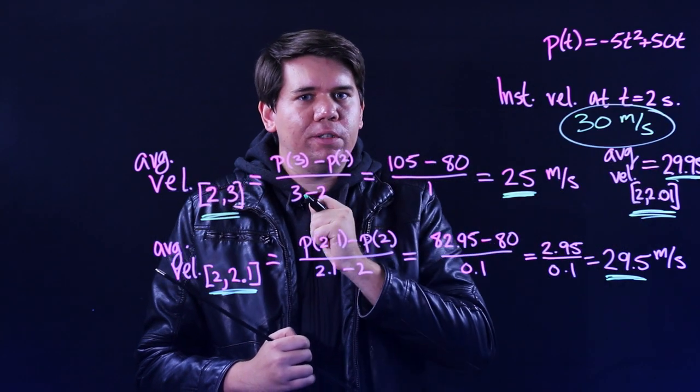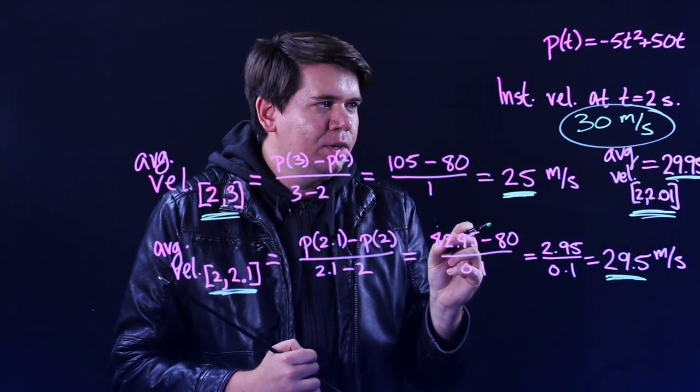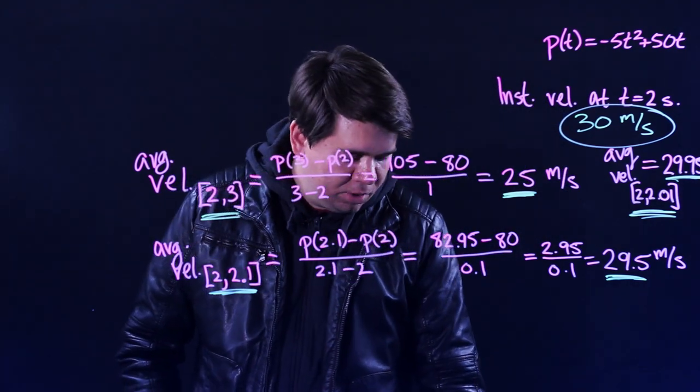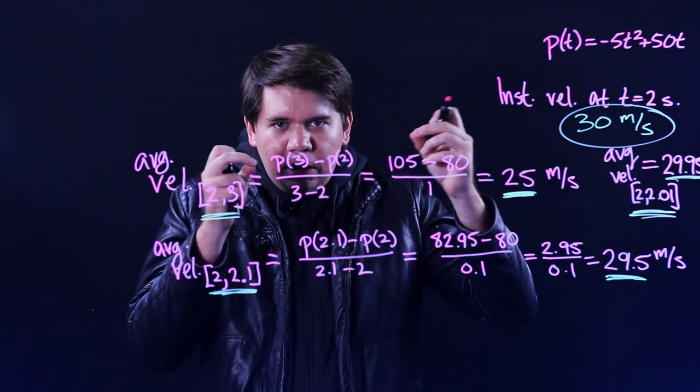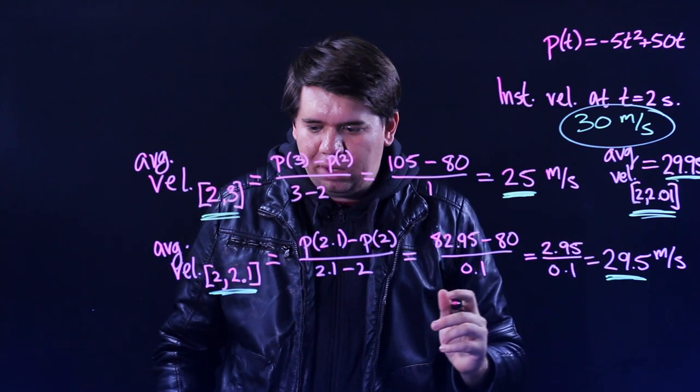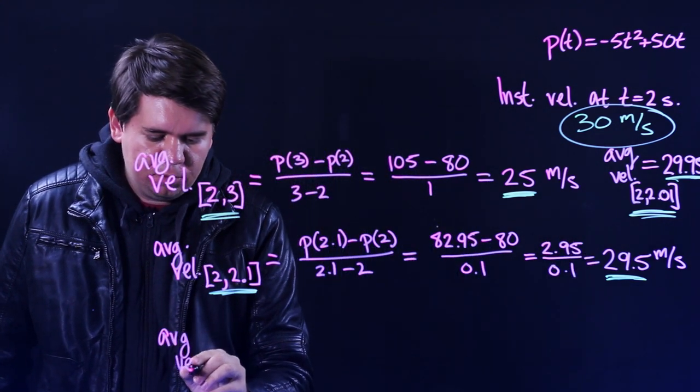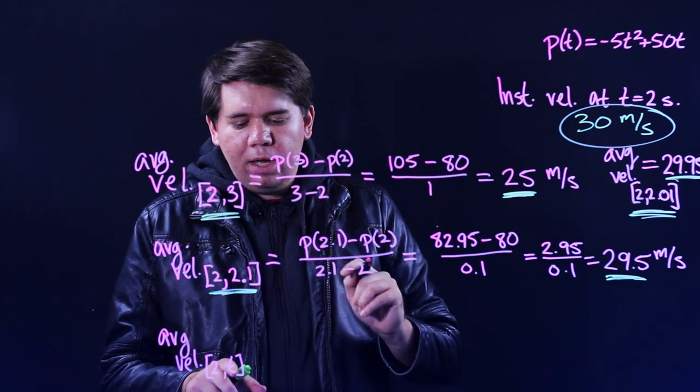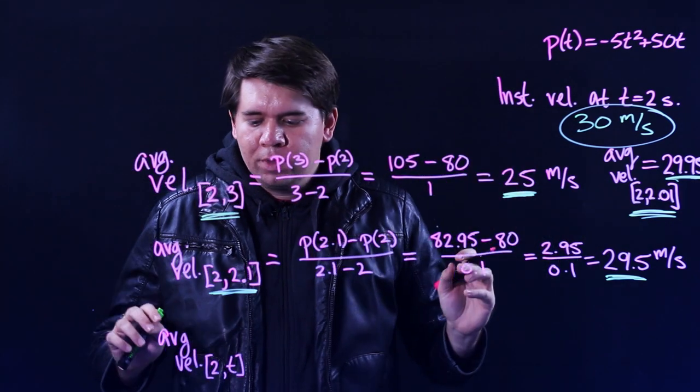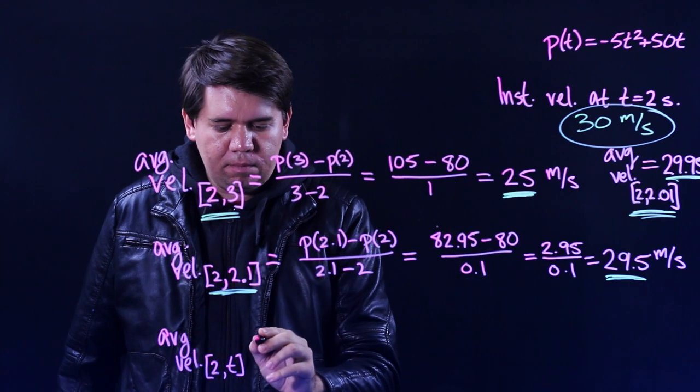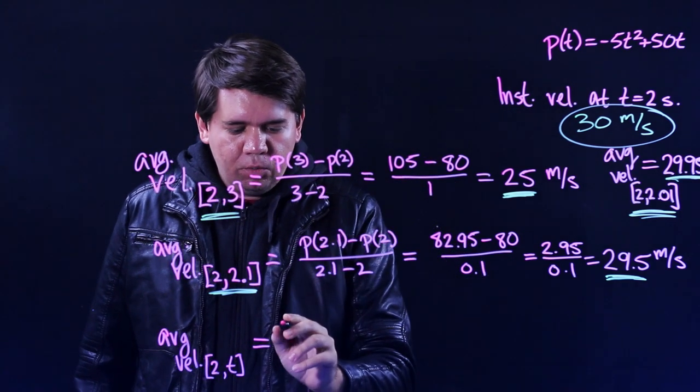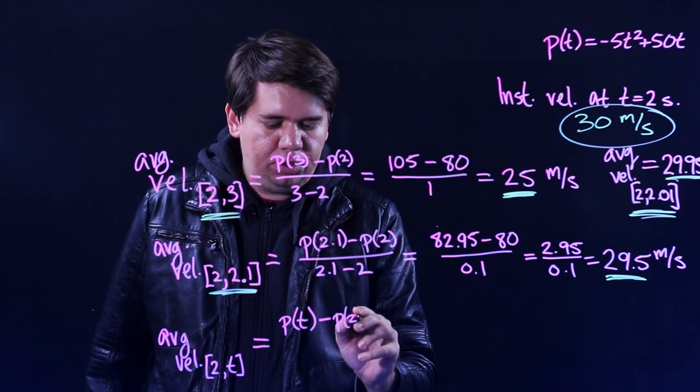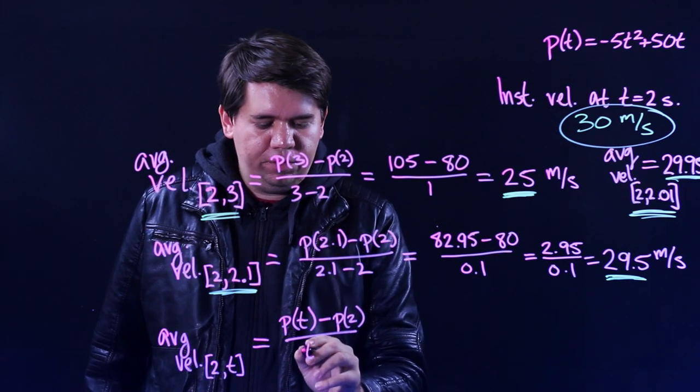But how can we be sure? How do we know that if you keep shrinking down the intervals smaller, it won't suddenly jump to 40 or 50 or 60? Ah, here's what algebra is going to help us out. What we're going to do now is instead of just keep zooming close and close and closer, we're going to look at all of the intervals at once by asking, what is the average velocity from time 2 to some arbitrary time t? t could be 2.1 or 2.01 or 2.001. Let's calculate it in general for any t.